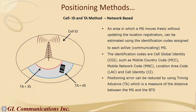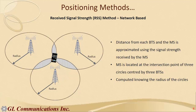The Cell ID method estimates location using identification codes assigned to each mobile subscriber — it is one of the least accurate methods. The Timing Advance method reduces the positioning error and provides a measure of distance between the mobile and the BTS. Introducing timing advance improves accuracy over basic Cell ID alone.